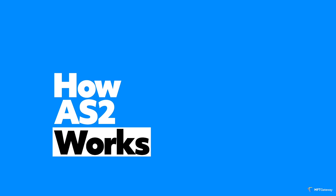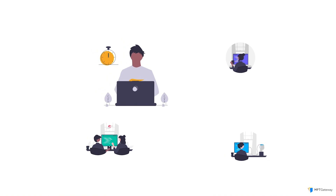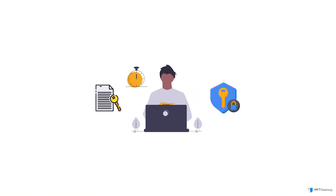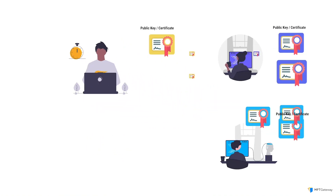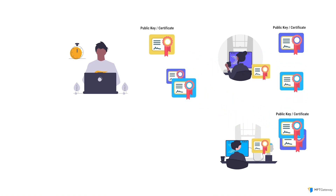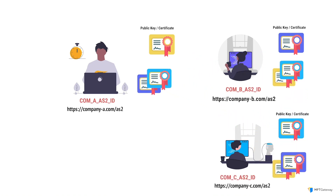How AS2 works: In a scenario involving multiple parties, each possesses a private and public key pair. The public key is shared as a certificate with every other party involved. Furthermore, each party exchanges their AS2 identifier and the URL of their respective AS2 service with one another.